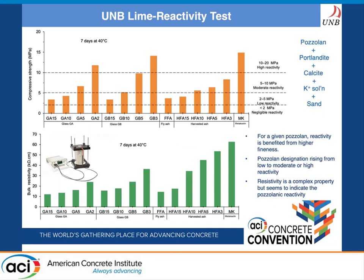The UNB lime reactivity test results are shown here. The top graph shows compressive strength development at seven days and the bottom graph shows bulk electrical resistivity. A classification was developed: less than 2 MPa strength indicates negligible reactivity; 2 to 5 MPa is low; 5 to 10 MPa is moderate; and 10 to 20 MPa is high reactivity. There is a significant benefit of grinding these materials to fine particle sizes. Both glasses show an increase in strength values, as does the harvested fly ash, which shows a slightly lower impact but still increasing strength values.